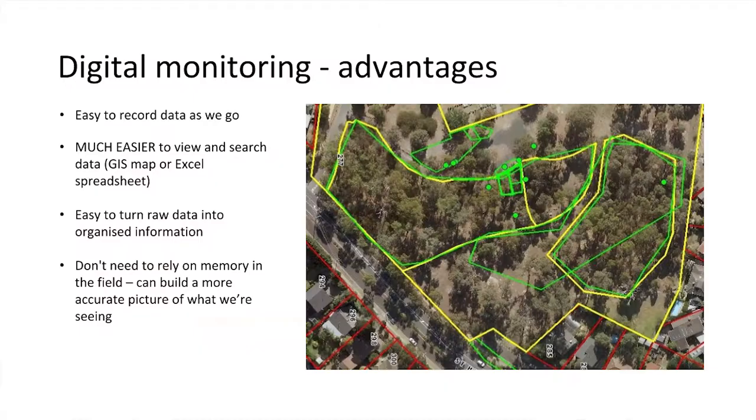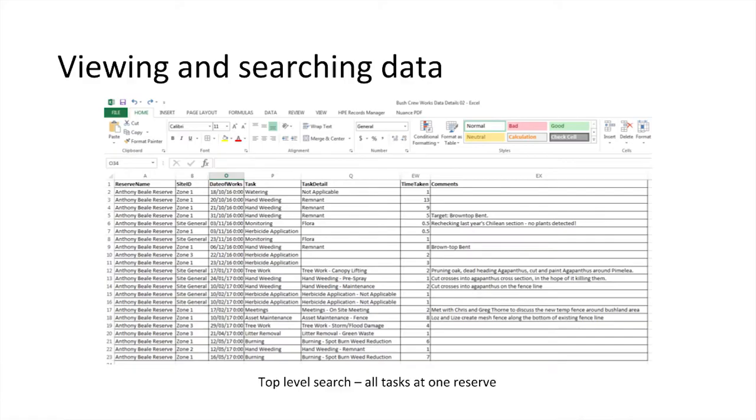It's important to note that a lot of this is really potential at the moment — it'll be much more useful once we've been using it for a few years and have accumulated a larger dataset. But in terms of immediate benefits, using it in the field makes it a lot easier to understand what's going on without relying on fallible human memory. For instance, if we go back to a site and notice a particular weed is dying off, it's easy to check which herbicide we used or exactly how long ago we sprayed, just by pulling out the iPad.